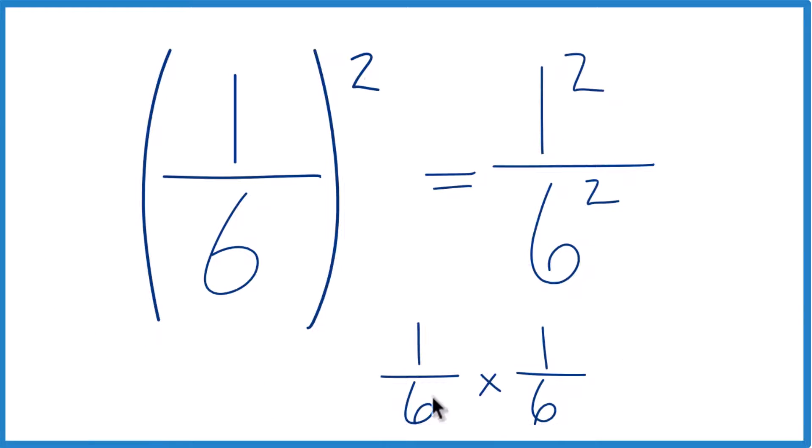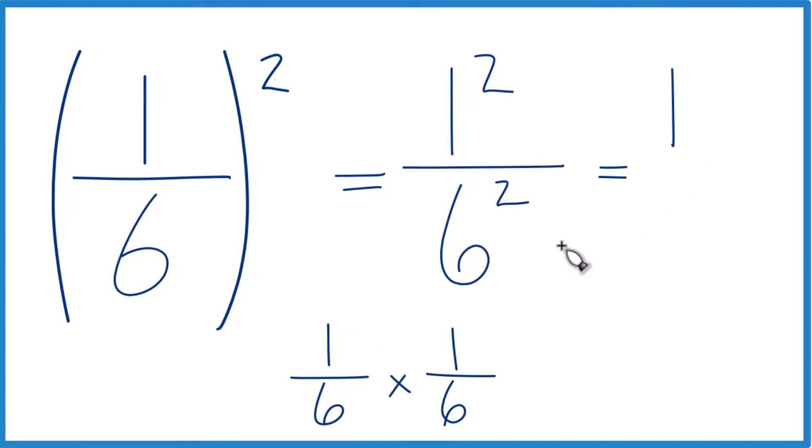So 1 times 1 is 1 squared. 6 times 6 is 6 squared. So let's do that. 1 times 1, that equals 1. And 6 times 6, that equals 36.